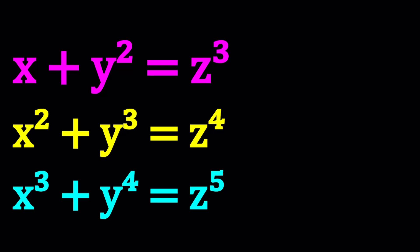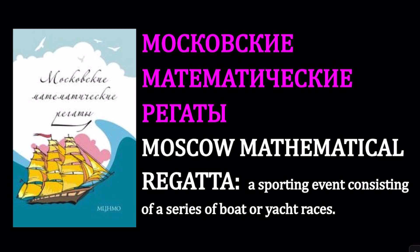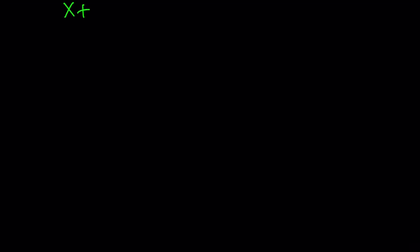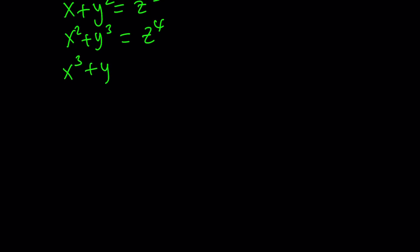Where does this problem come from? This problem comes from the Moscow Mathematical Regattas, and it's a beautiful problem. So let's go ahead and take a look at it. We have x plus y squared equals z cubed, x squared plus y cubed equals z to the fourth, and x cubed plus y to the fourth equals z to the fifth.